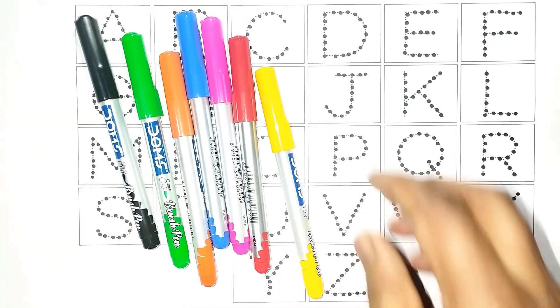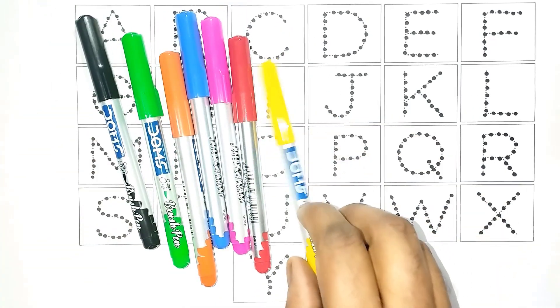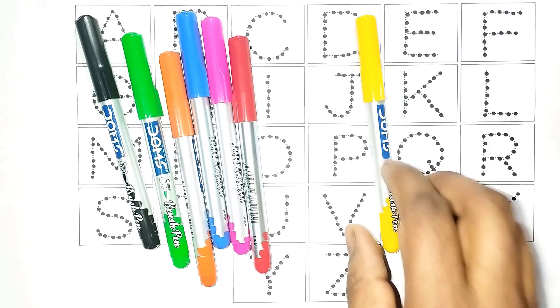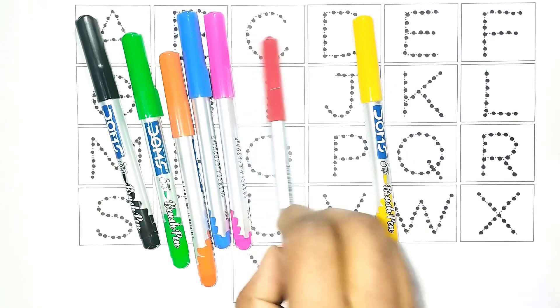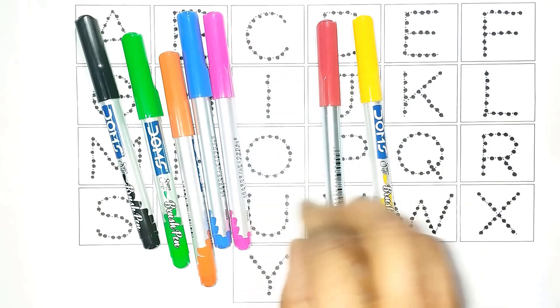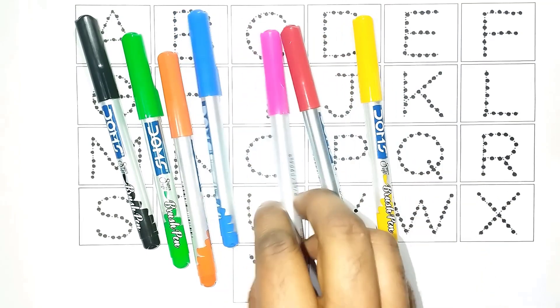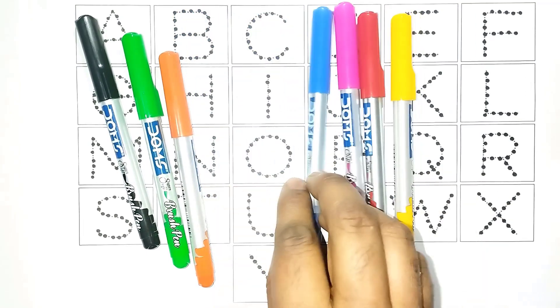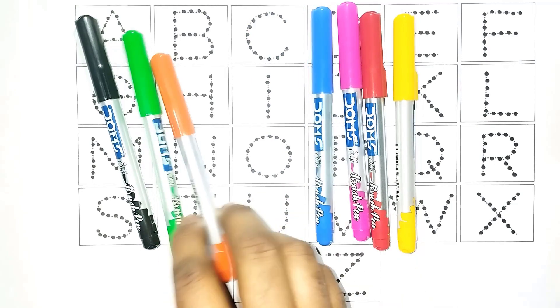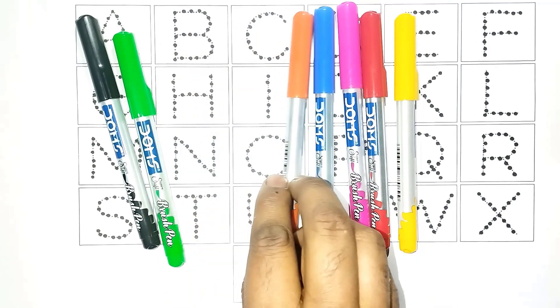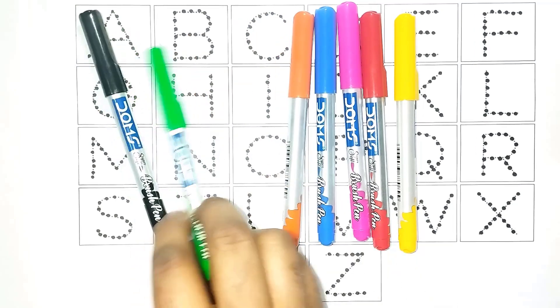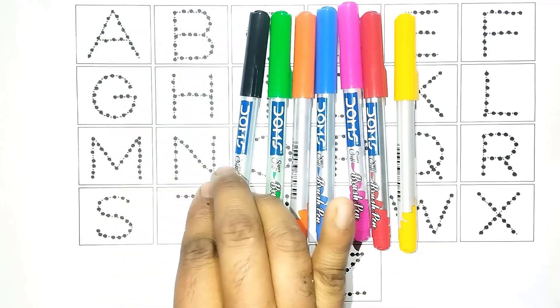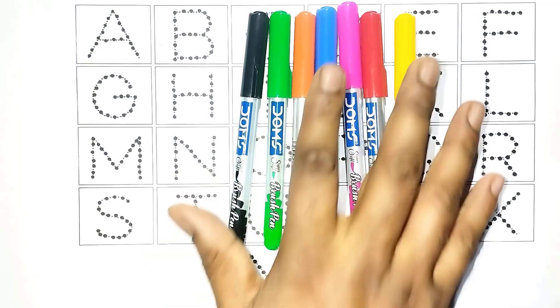Color name: yellow, red, pink, blue, orange, green, black.